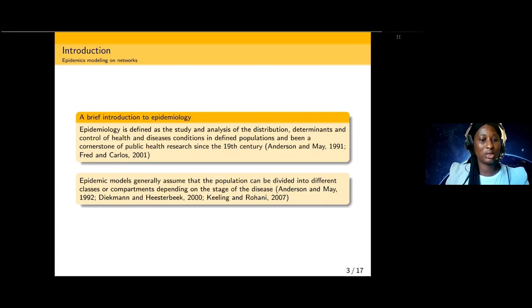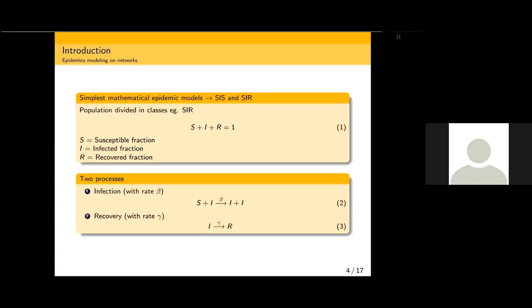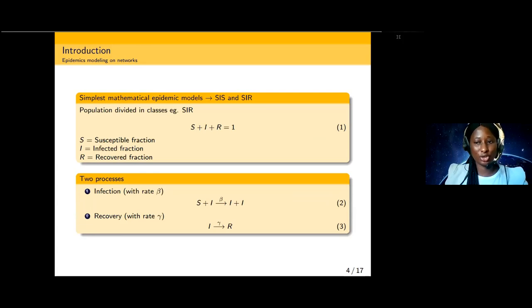Epidemic models generally assume that the population can be divided into different classes or compartments depending on the stages of disease. One of the simplest two-state compartmentalizations in epidemic models is the SIR and SIS models. In the SIR model we have the susceptible population, the infected class, and the recovery class where the susceptible class interacts with the infected class.